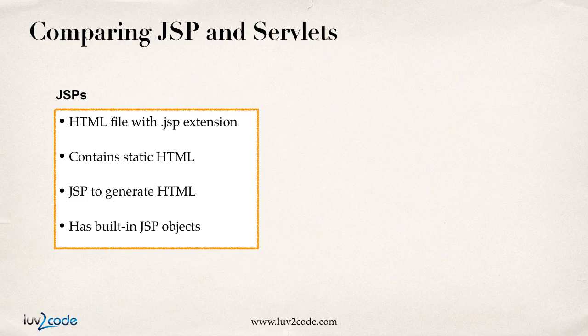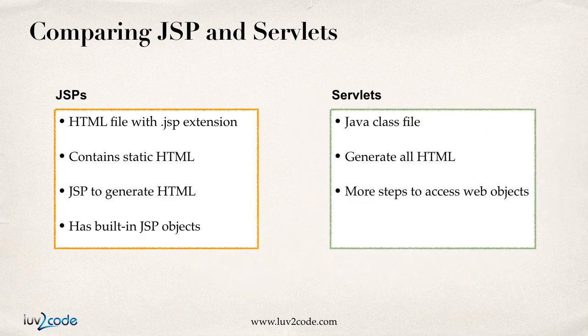As a quick recap: JSP is really just an HTML file with a .JSP extension. It has some static HTML and also some JSP code to generate HTML on the fly as needed. JSP also has a collection of built-in objects you can use directly. Servlets, on the other hand, are Java class files — like HelloWorldServlet.java. You have to write all of the code to generate the HTML yourself, and there are additional steps to access web objects like response.setContentType(), response.getWriter(), and so on.